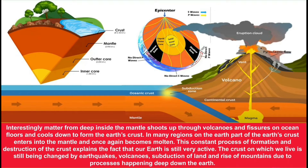The crust on which we live is still being changed by earthquakes, volcanoes, subduction of land, and rise of mountains due to processes happening deep down in the earth. You can see the continental crust with magma below it, which comes out through volcanoes — and the same process happens under the ocean floor as well.